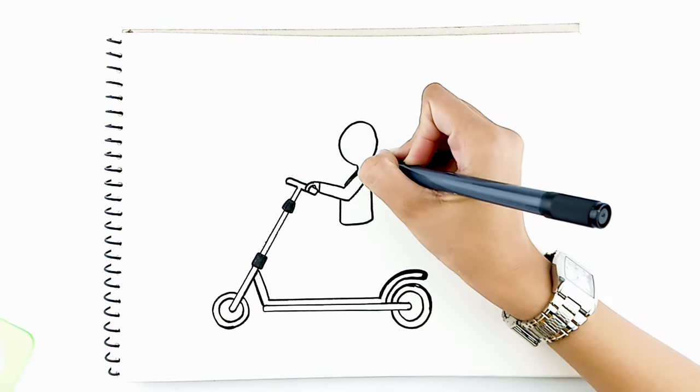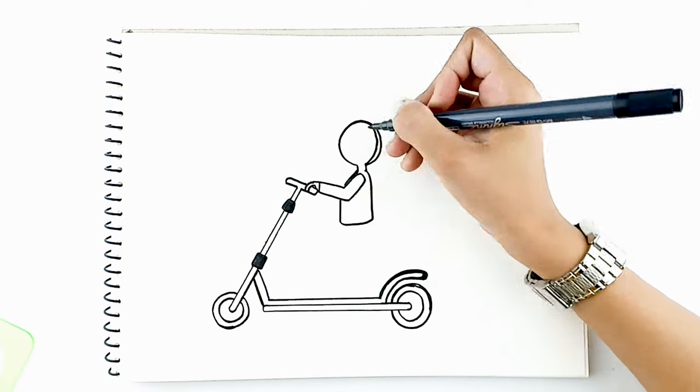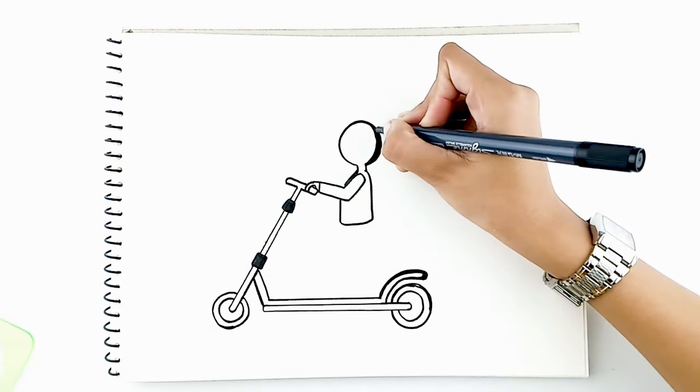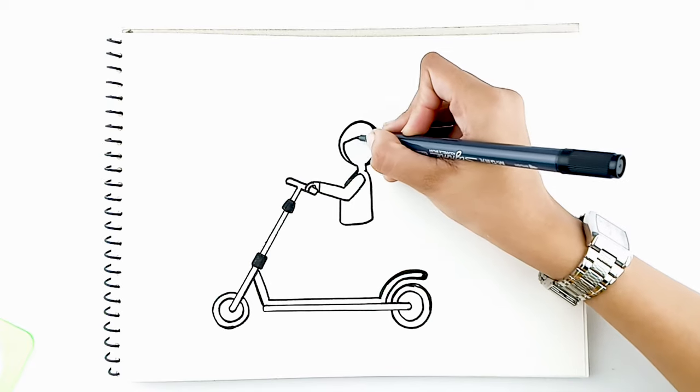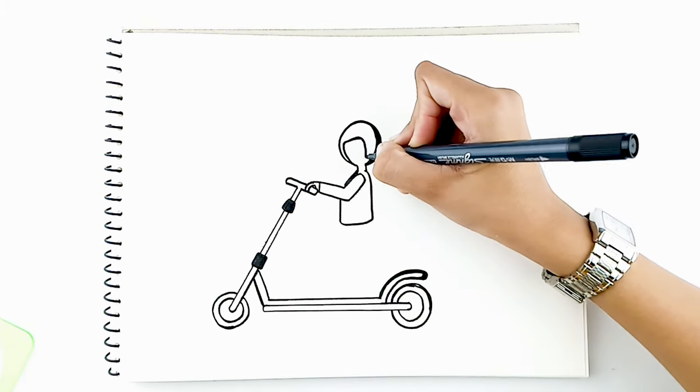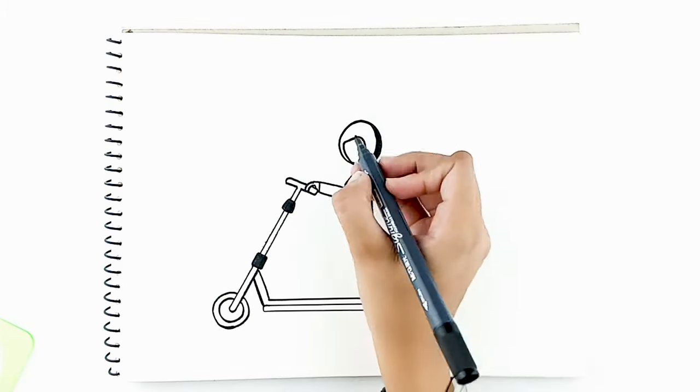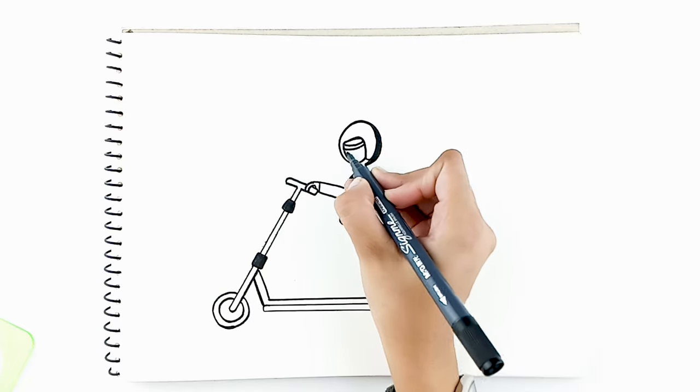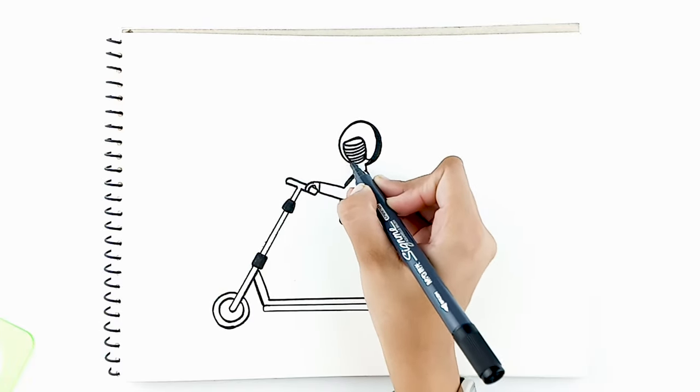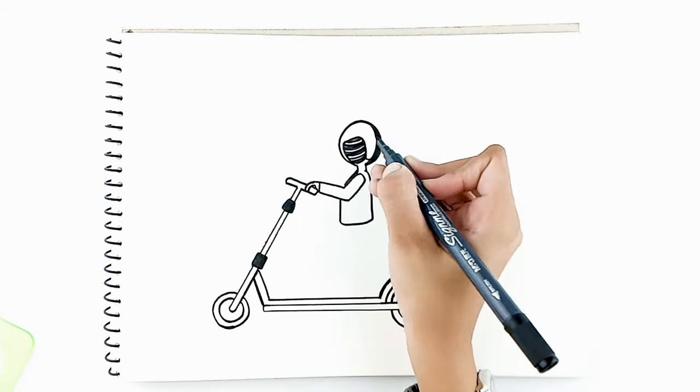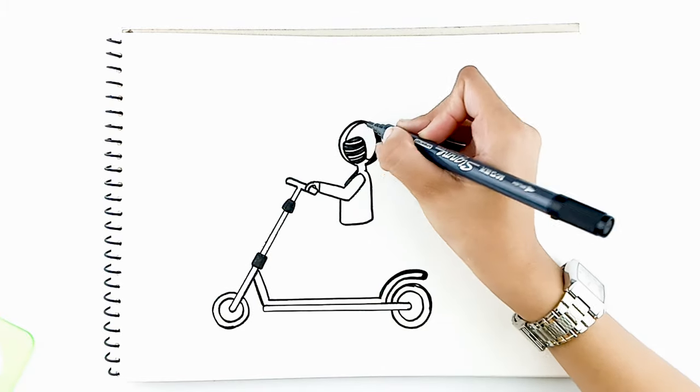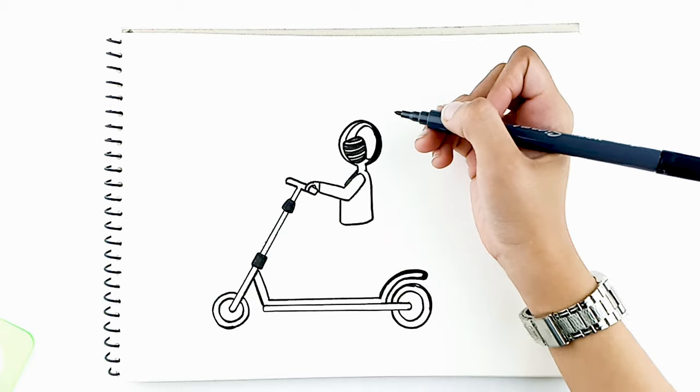Draw the shape of the helmet around the head. With a line across the forehead, leaving space for the visor. Draw some black stripes across the visor. And draw a thicker stripe going across the helmet. And that's done.